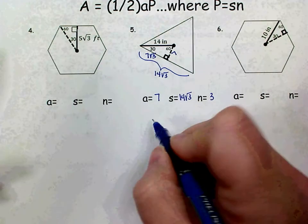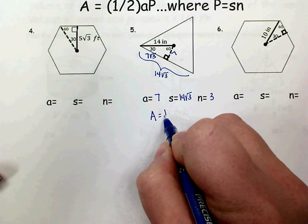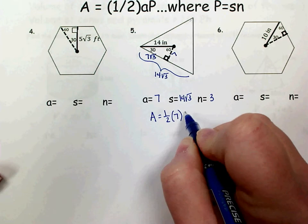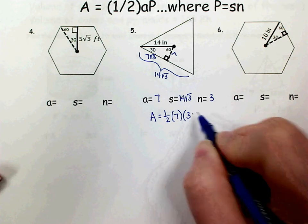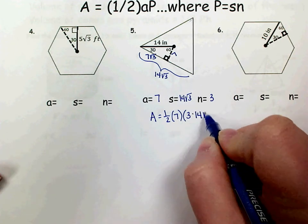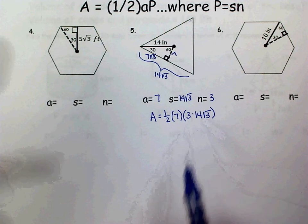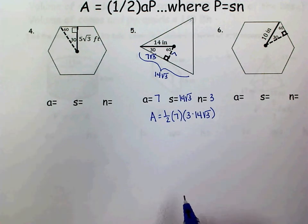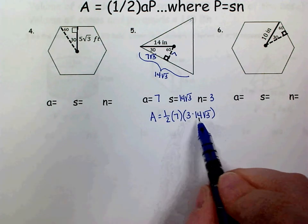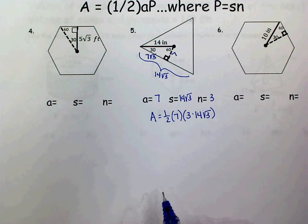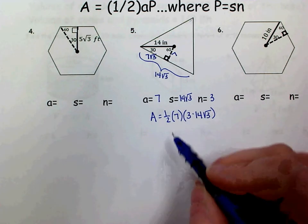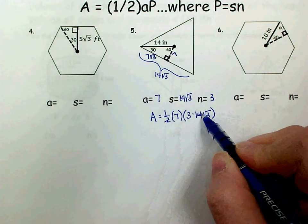So my area will be 1/2 times the apothem times the perimeter, which is the number of sides times the side length. Be really careful with your multiplication dots. Make sure that they don't look like decimals, so you wouldn't want to look at that as 3.14. So remember, you can do the multiplication in any order.